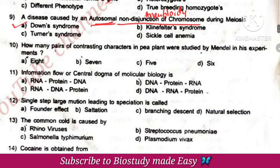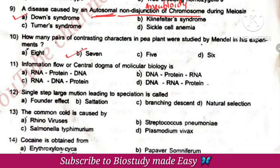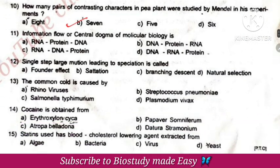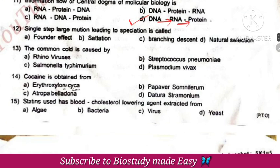How many pairs of contrasting characters did Mendel study? It is 7 pairs of contrasting characters. The central dogma of molecular biology: first DNA replicates, DNA transcribes to RNA, RNA translates to protein. A single-step large mutation is called saltation.